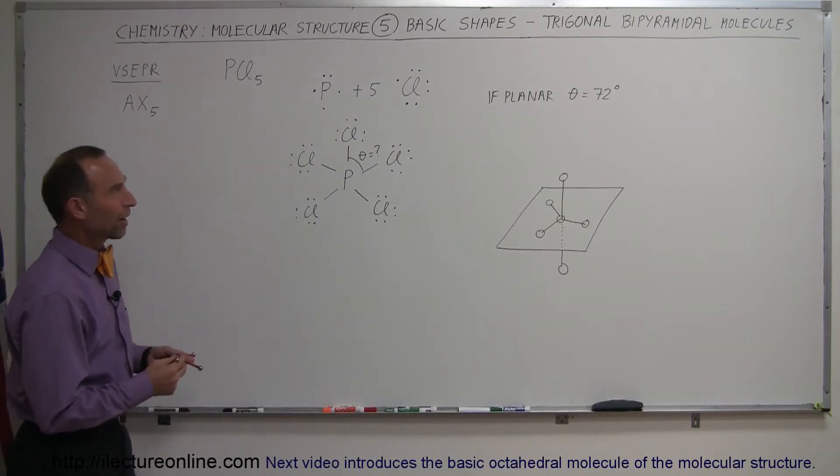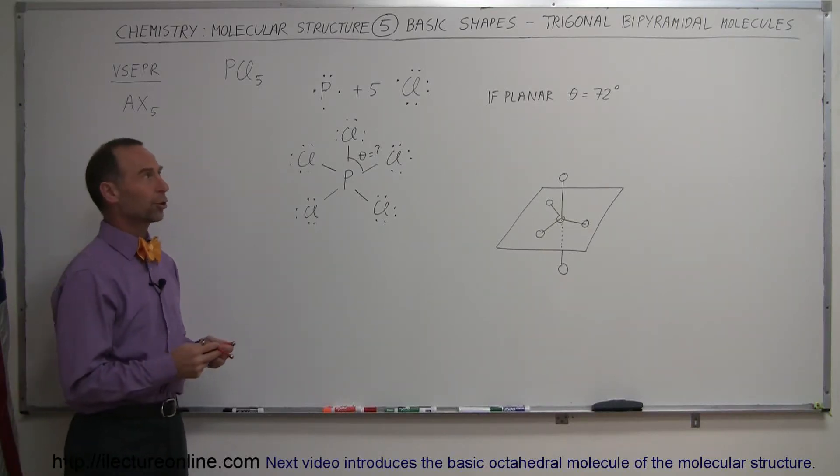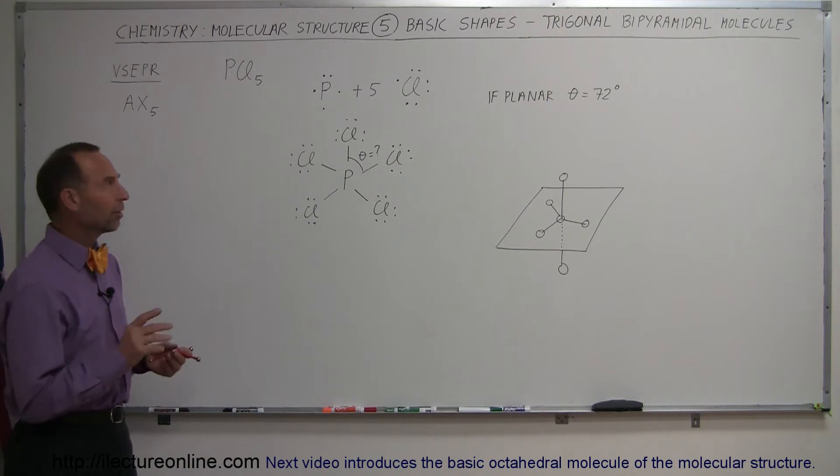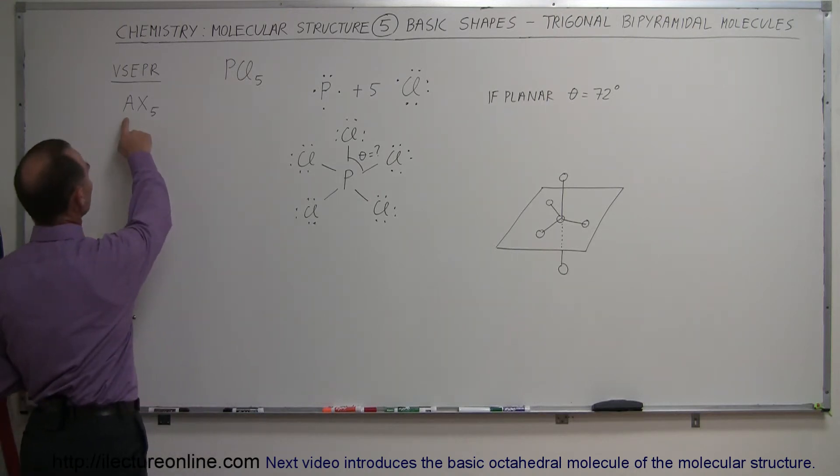Here's our next shape, it's called the trigonal bipyramidal molecule, and that is a molecule that is formed when we have one central molecule and five appendages, so to speak.